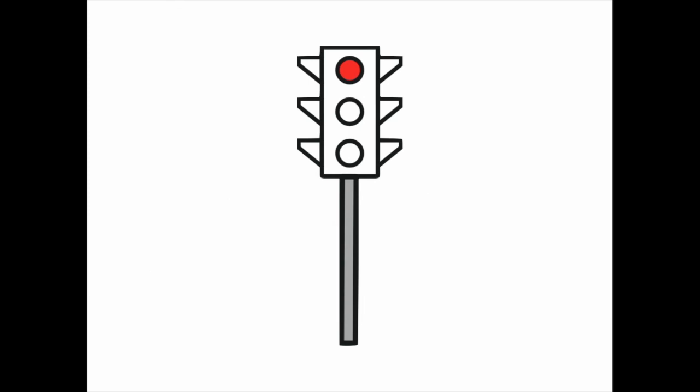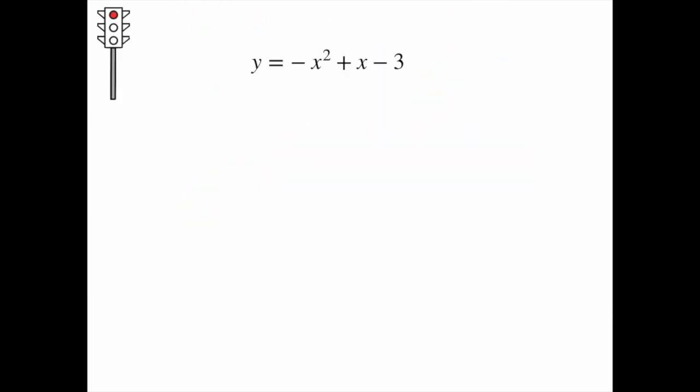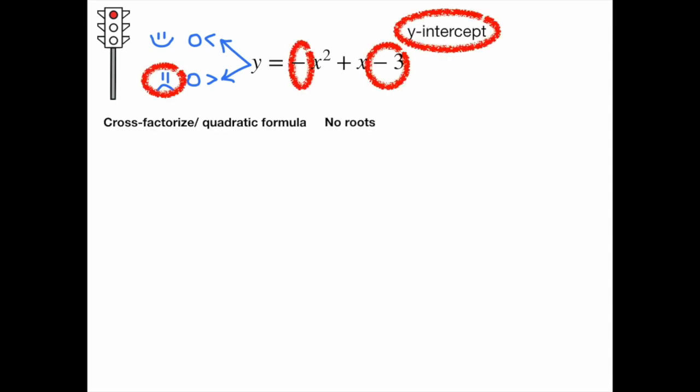The last path you'll ever need here happens if there are no X intercepts. In this example, I go through the same routine and obtain an A value of negative 1 and a C value of negative 3. Cross-factorizing or calculator magic does not yield any roots here.